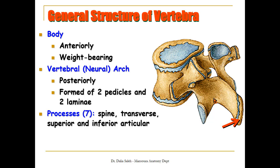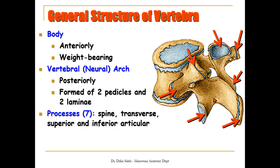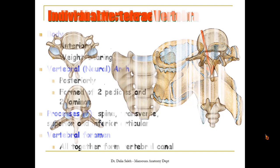We also have two transverse processes on the sides, and four articular processes — two superior and two inferior — for articulation with the vertebrae above and below. We have the vertebral foramen, which lies posterior to the body. When the vertebrae stack one over the other, we have the vertebral canal, in which lies the spinal cord and its meninges.